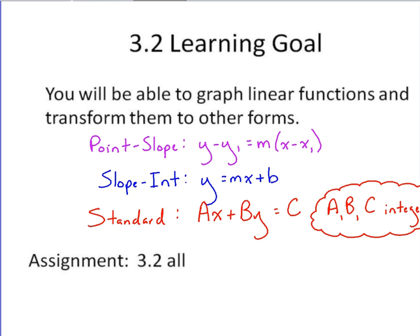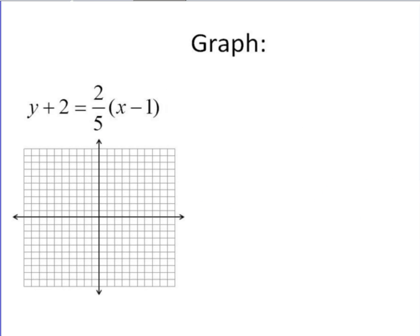We need to recognize for this example that point-slope form is given. So if point-slope form is given and I'm asked to graph, then let's identify a point I can work with from this form and then let's identify the slope as well. Now slope is going to be this value in front of the quantity that contains the x's, so slope is going to be two fifths.